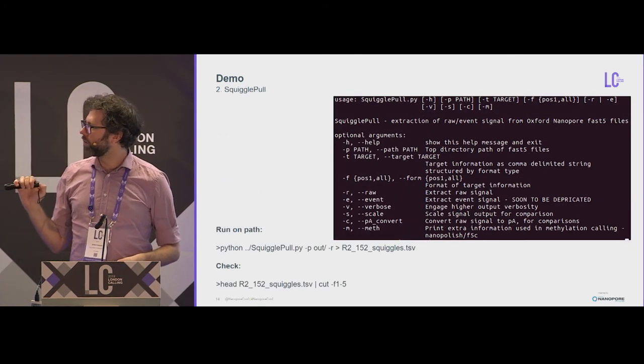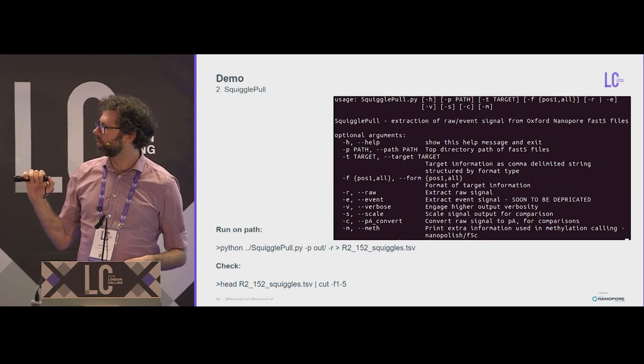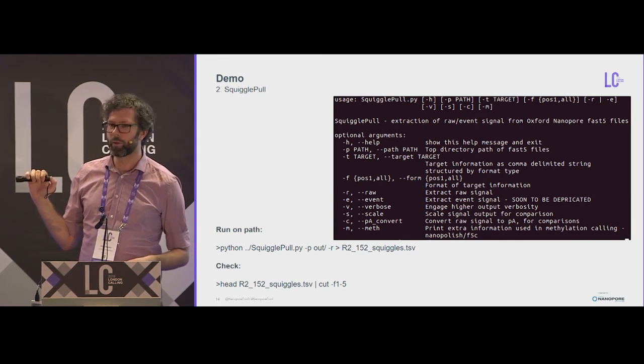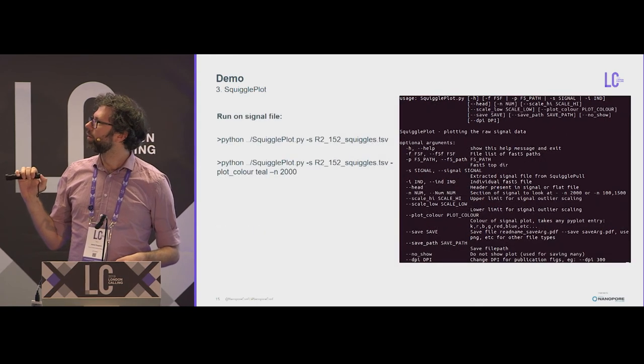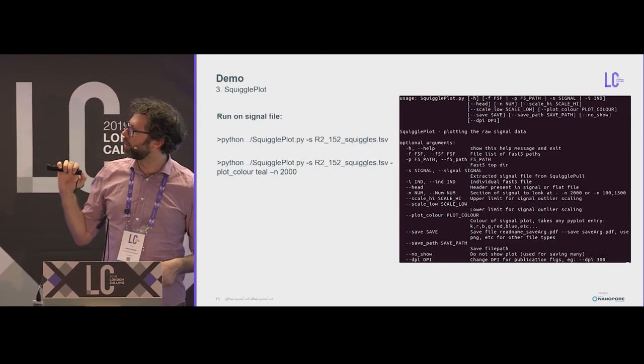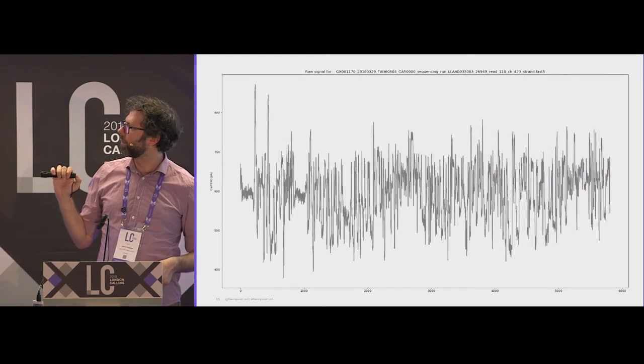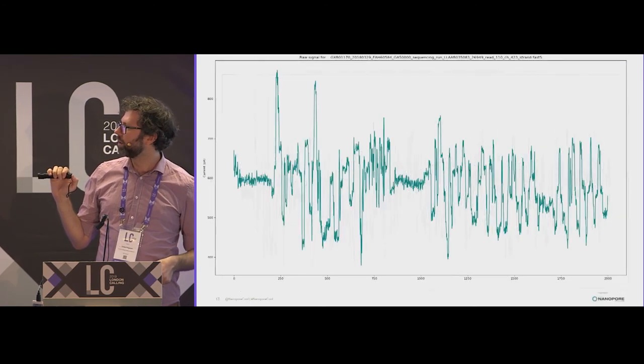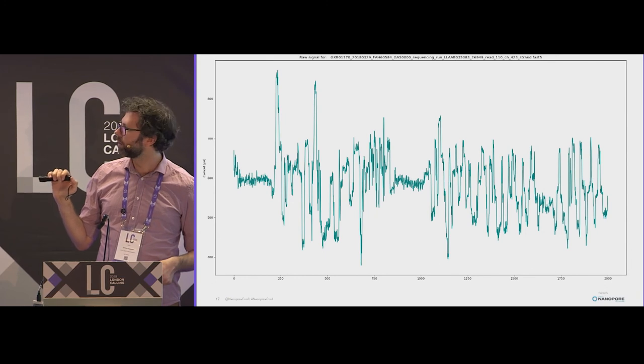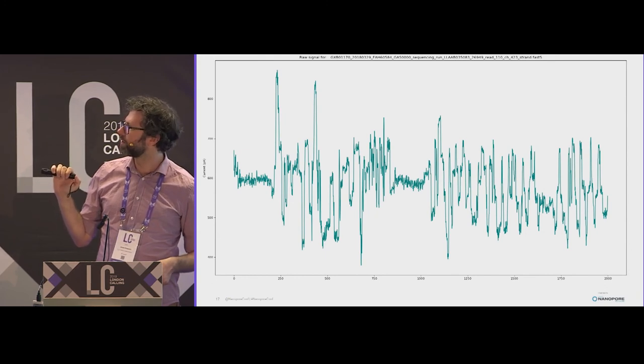We've got SquigglePull. It's very simple. Just Python, what it is, where you want it. Name the file. It makes it for you. We've got SquigglePlot. You can tell it just to plot, say, the first 2,000, and change the color. So this is default. This is zoomed in at 2,000. And when you start looking at squiggles, you can see these aberrations.